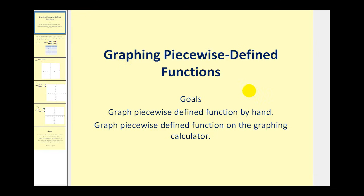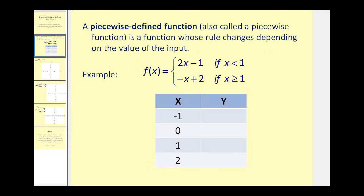Welcome to a video on graphing piecewise defined functions. The goals are to graph a piecewise defined function by hand as well as on the graphing calculator. A piecewise defined function is a function whose rule changes depending on the value of the input — in this case the value of x. You can see why it's called piecewise defined because it has two different pieces or two different rules based upon the given value of x.